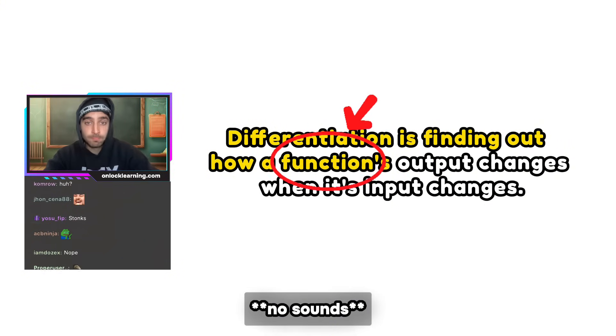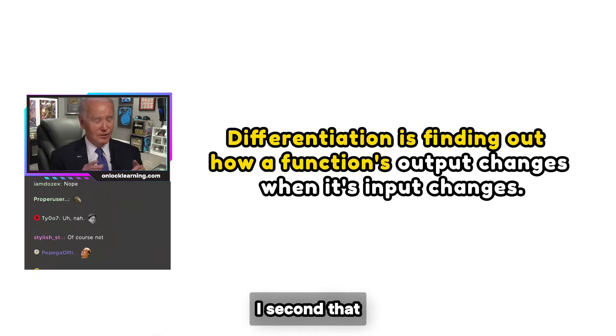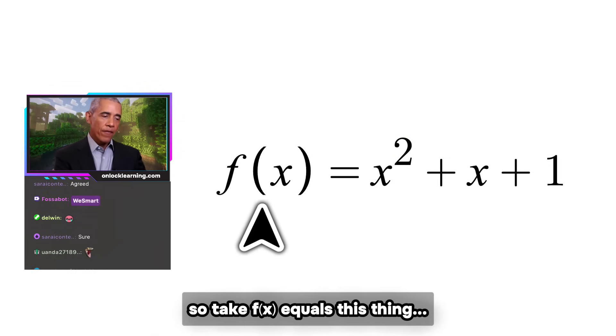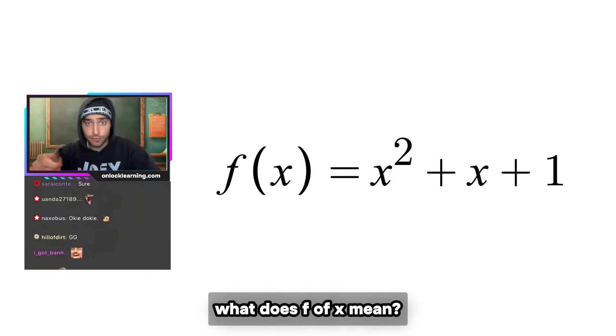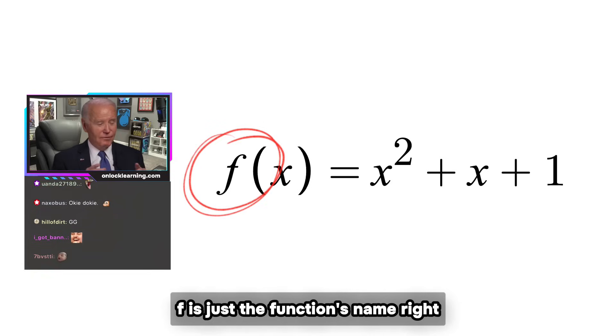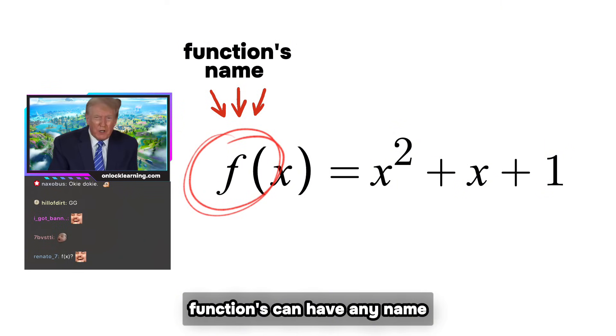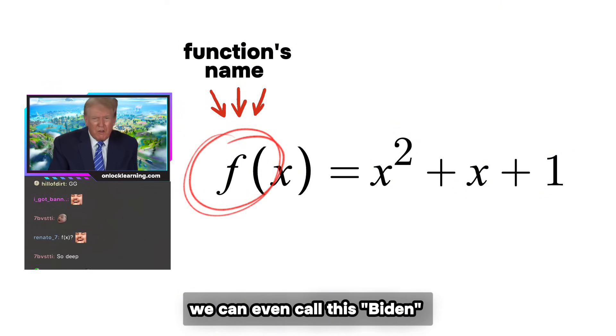I think we should start there then boys, I second that. Okie dokie. So take f(x) equals this thing—this is an example of a function. What does f(x) mean? Listen, f is just a function's name, right? Joe's right, functions can have any name. We could even call this Biden if we wanted.